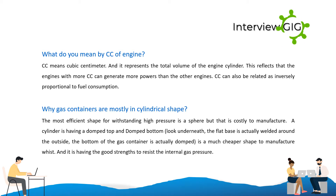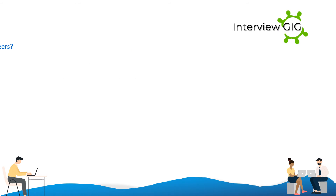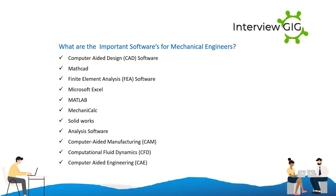Why are gas containers mostly in cylindrical shape? The most efficient shape for withstanding high pressure is a sphere, but that is costly to manufacture. A cylinder with a domed top and domed bottom is a much cheaper shape to manufacture and has good strength to resist internal gas pressure.